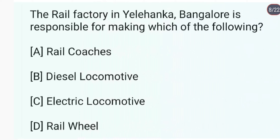The rail factory in Yelahanka, Bangalore is responsible for making which of the following? Ye responsible hai rail wheel ke liye. Answer is D. The rail factory in Yelahanka, Bangalore is responsible for making rail wheels. The factory is also known as the Wheel and Axle Plant.